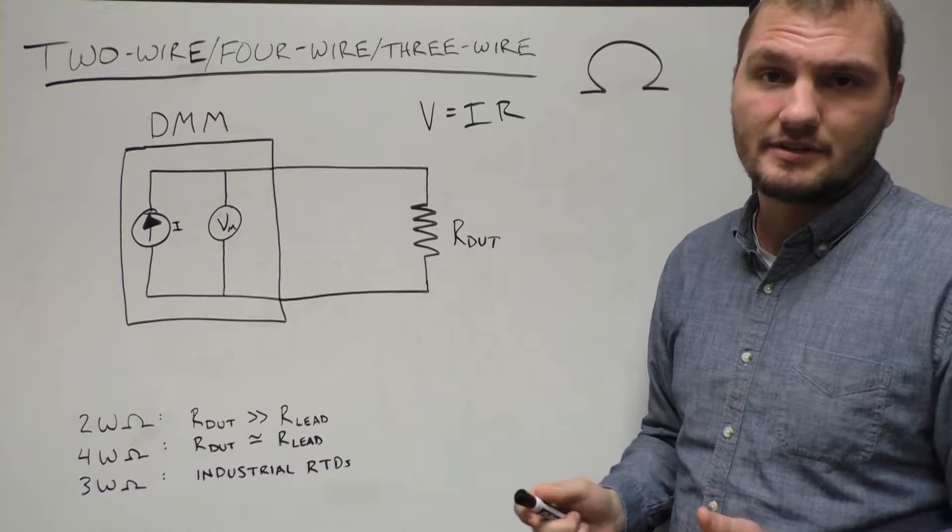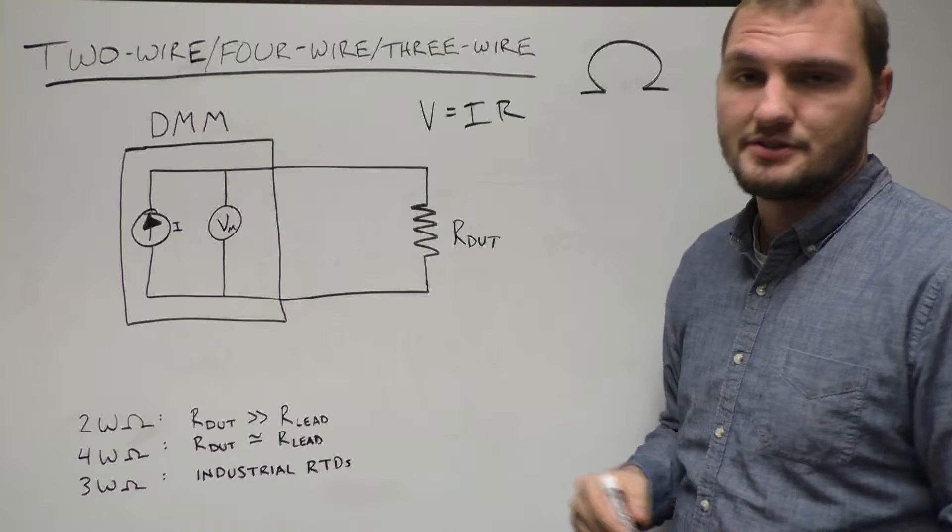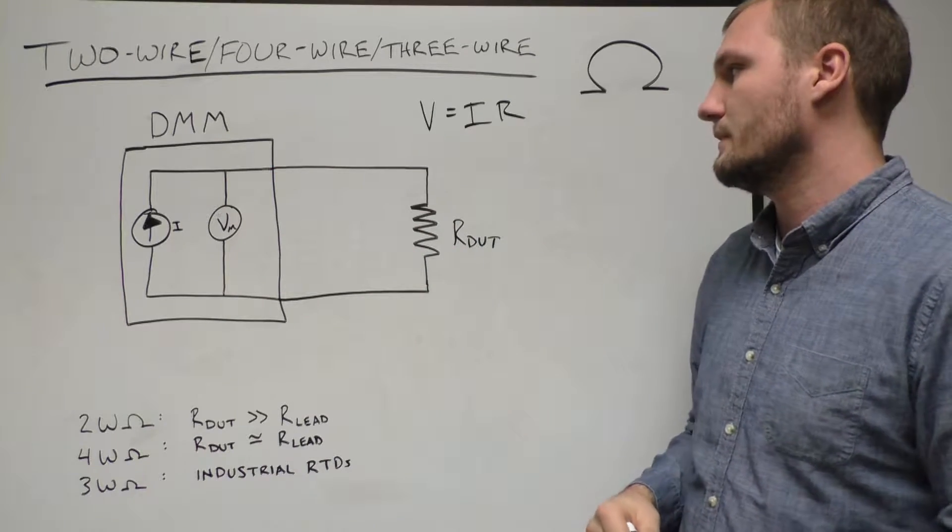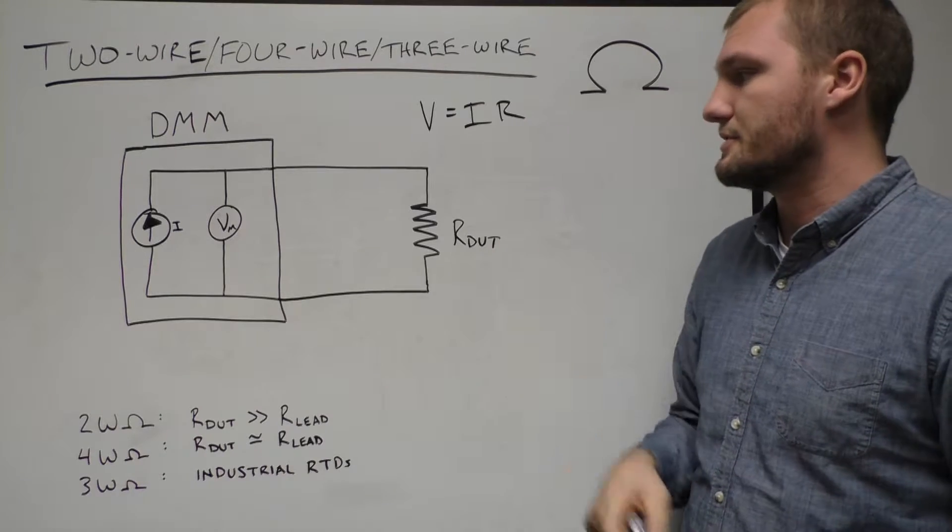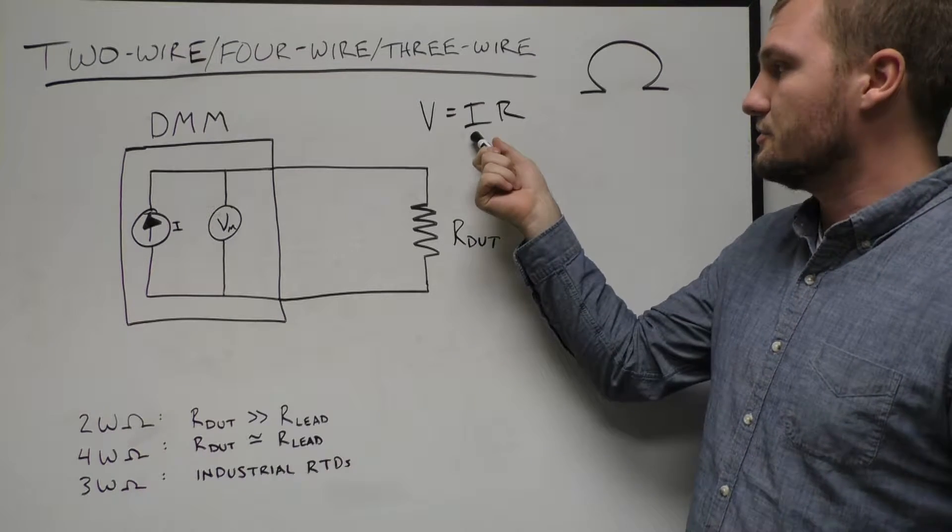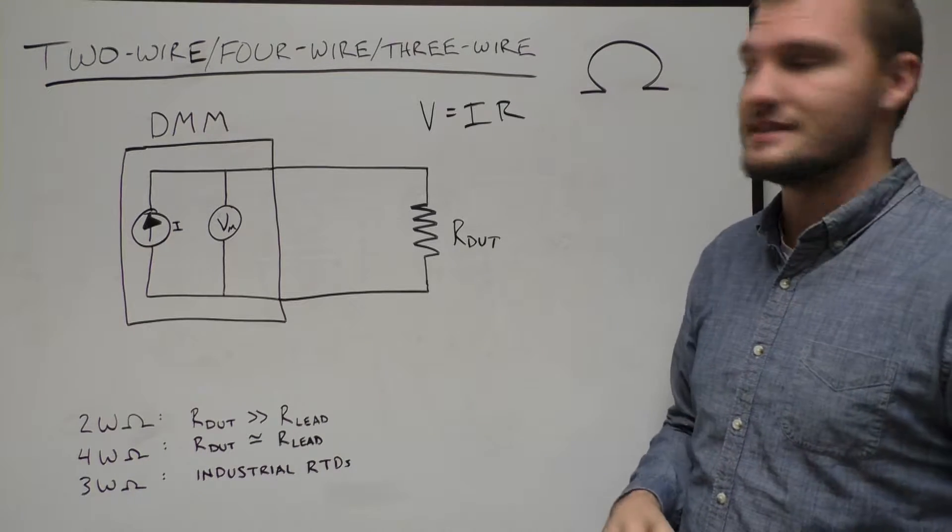The first technique we're going to be talking about is 2-wire, and we have an example here using a DMM to measure a resistor. Now if you remember, Ohm's law, V equals IR, is how we measure resistance. We usually source a programmed current and measure a voltage, which allows us to calculate for the resistance.